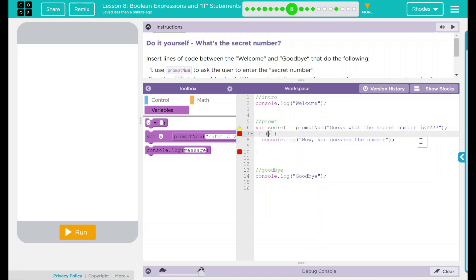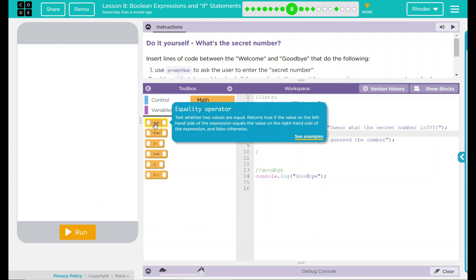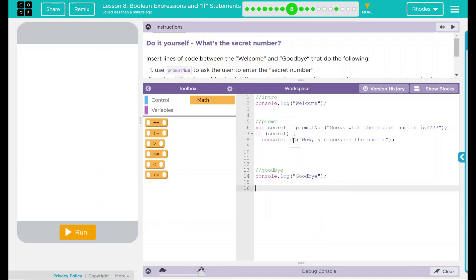Well, what is our number going to be? Well, secret because that's our variable and looking at our math over here, our operations, what I want it to be is exactly it. So I want it to be equal to. So I'm going to put over here two equal signs.